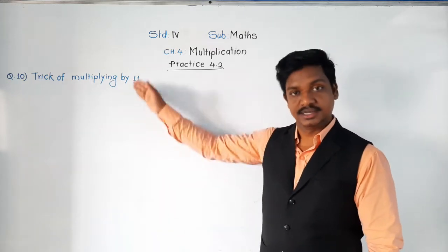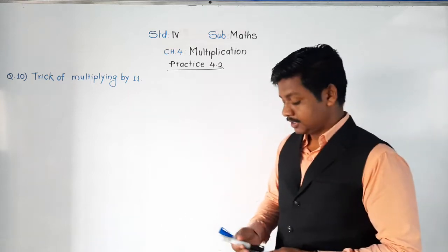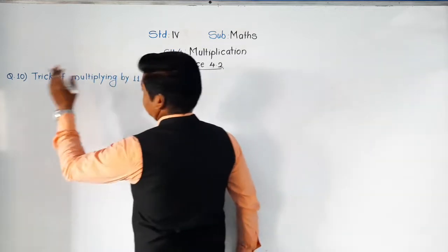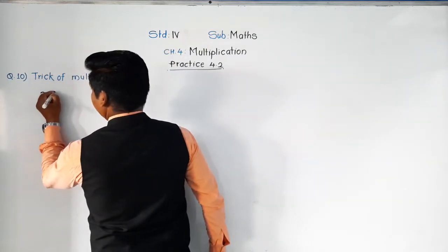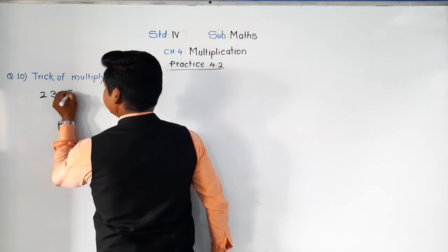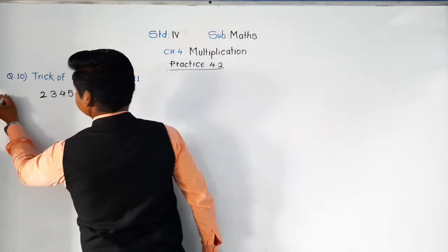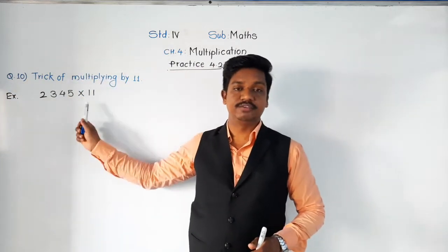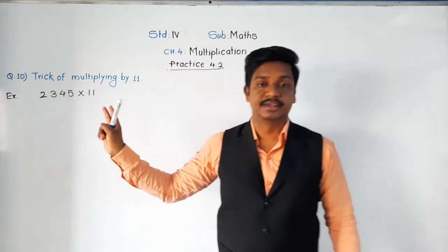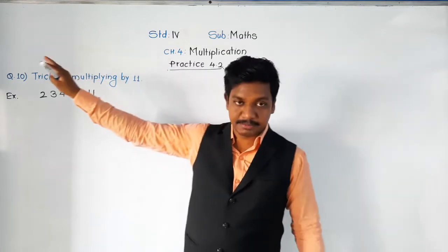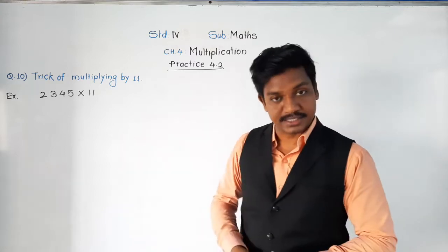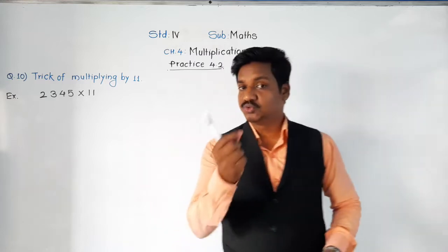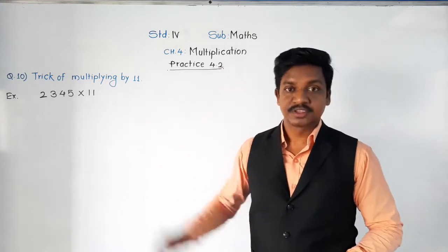Let's learn the trick with an example: 2345 into 11. We have to multiply 2345 by 11. Using tables you would multiply, but it will take three or four minutes. If you know this trick, you can do it within a fraction of a minute.